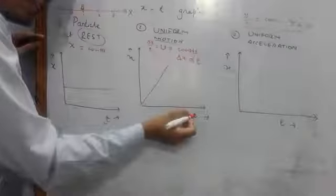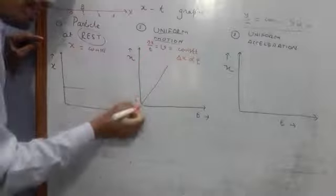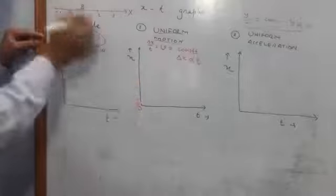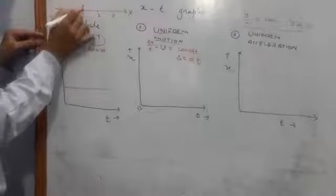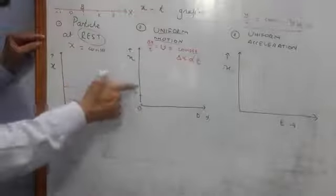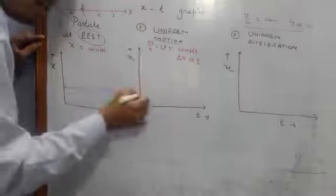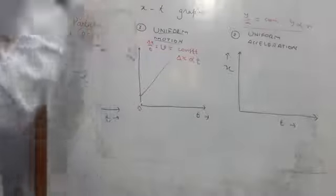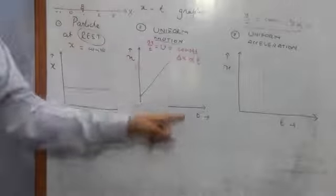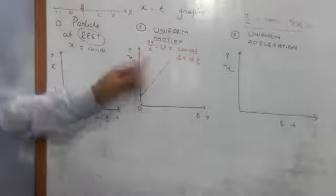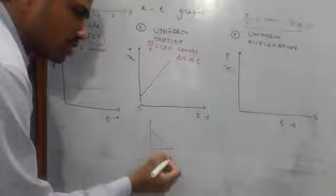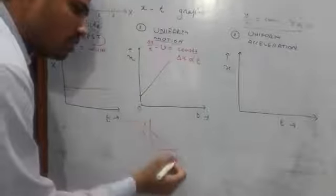Since delta x is proportional to delta t, between x and t the graph should be a straight line. If at t equal to 0 the particle was at the origin, the graph will start from the origin. But if initially it was at x equal to 1, we start the graph from there. Always remember students: for uniform motion, the position-time graph or x-t graph will be a straight line — it may be inclined upward or downward, but always a straight line.